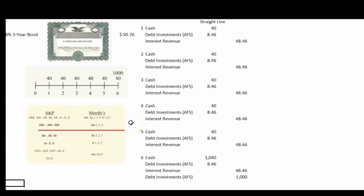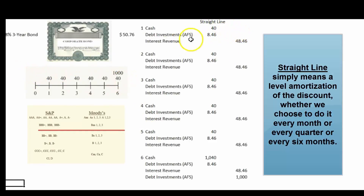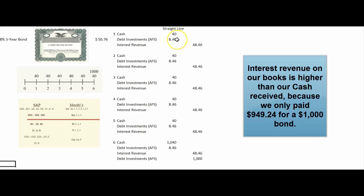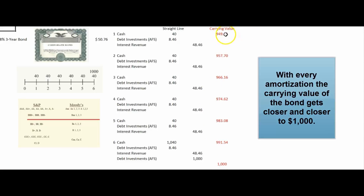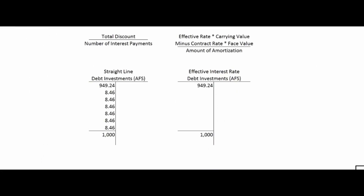That means we're going to amortize $8.46 every time we receive an interest payment. So every time we get a cash payment of $40, we debit cash for $40, debit debt investments (available-for-sale) for $8.46, and credit interest revenue for $48.46. It makes sense that our interest revenue is more than the $40 cash, because we only paid $949.24 for this bond but we're still getting paid interest at 8% on a $1,000 face. In the carrying value column, it goes from $949.24 up by $8.46 every six months until we reach $1,000. The straight-line method is super easy to calculate.